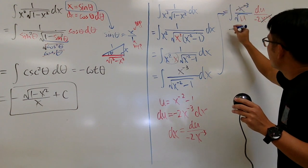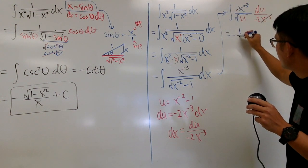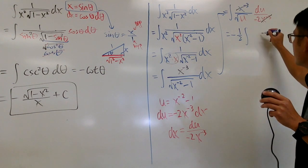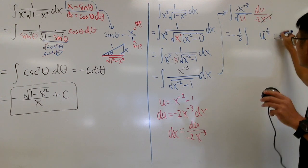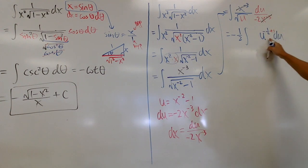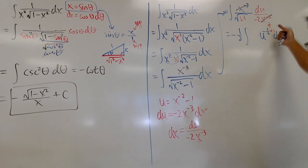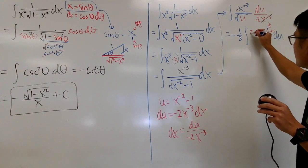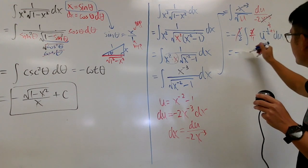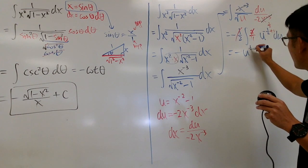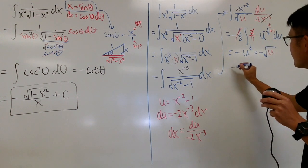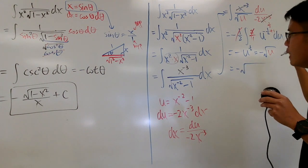Bringing the negative 1/2 to the front, we have negative 1/2 times the integral of u to the negative 1/2 du. Integrating: negative 1/2 plus 1 gives positive 1/2, and dividing by 1/2 is the same as multiplying by 2, so those cancel. We get negative u to the 1/2, which is negative square root of u, and substituting back gives negative square root of x to the negative 2 minus 1.